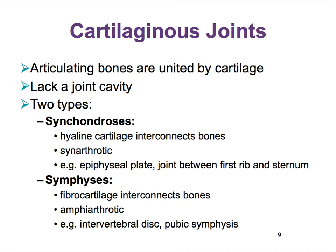That brings us to our cartilaginous joints. These are joints where bones are interconnected by a type of cartilage — specifically hyaline cartilage or fibrocartilage. We still do not have a joint cavity, again implying that either there's absolutely no movement possible or somewhat limited movement, so they're either synarthrotic or amphiarthrotic. We have two small groups: synchondroses, literally meaning 'together with cartilage,' and symphyses. You've come across symphyses when studying fibrocartilage locations — the pubic symphysis and intervertebral discs are both examples of symphyses.